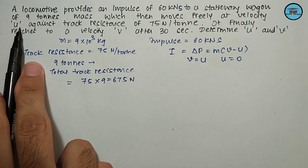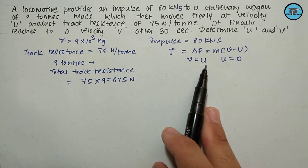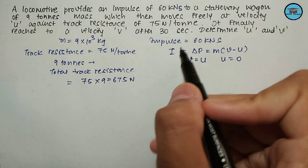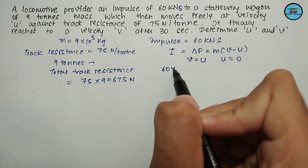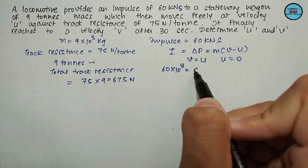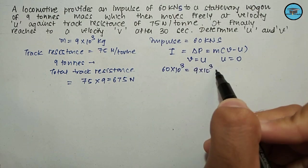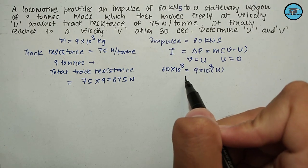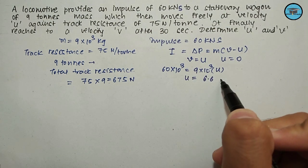After the locomotive provides an impulse of 60 kilonewton-second to the wagon, it reaches velocity U, meaning the final velocity is U. Placing the values, we get 60 × 10³ = 9 × 10³ × U, so U equals 6.6 meters per second.